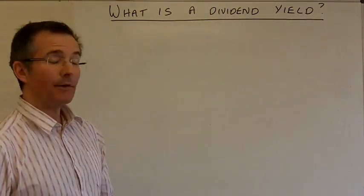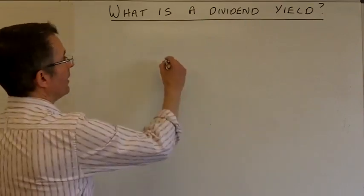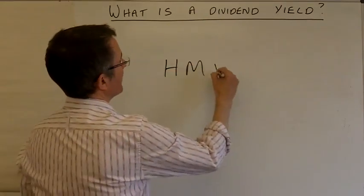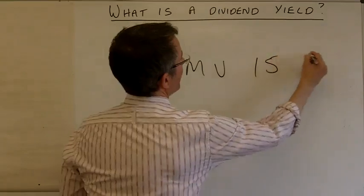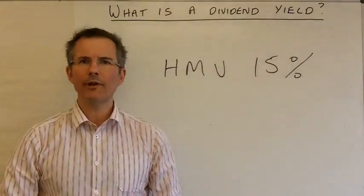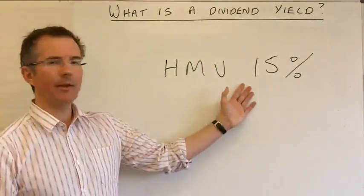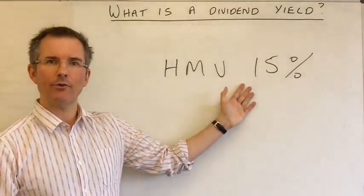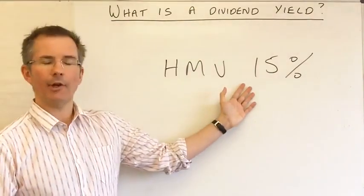The other factor to bear in mind is that some companies pay much more generous yields. So I might be tempted to abandon United Utilities and look at HMV. Now, there, I can get a yield of around 15%. Well, who'd go for a boring old utility company when you can get 15% from a company that distributes records, DVDs and CDs? Surely that's a no-brainer.